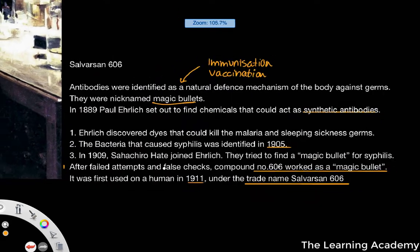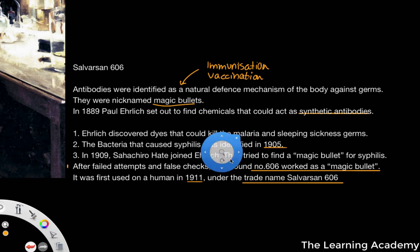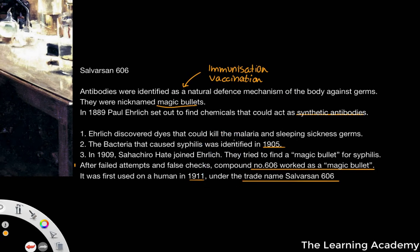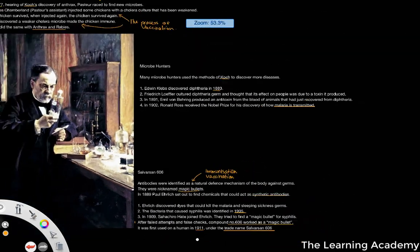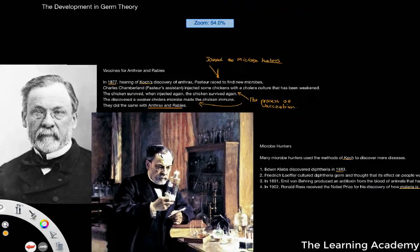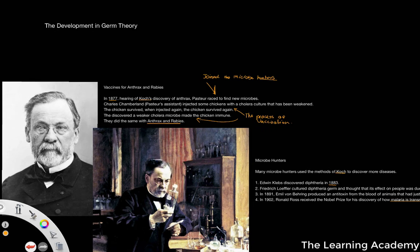The discovery of antibodies, so-called magic bullets, and the ability to use synthetic antibodies to help cure syphilis really developed medicine even further in the 1900s. Moving into the 20th century, we start to see the development of medicine at an increasingly fast rate — almost a revolution in medicine — including the two world wars advancing medical processes, all the way up to the present day.